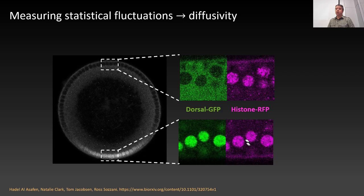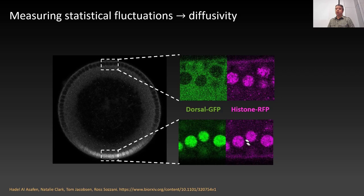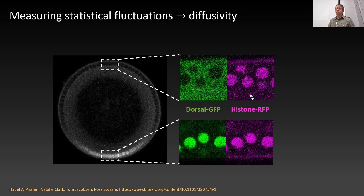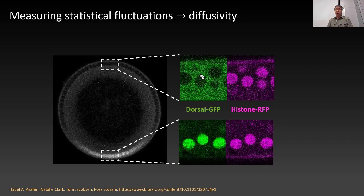In the green channel you have dorsal GFP, and shown in magenta is histone red fluorescent protein, which is inside the nucleus both on the ventral and dorsal sides. The whole point of the histone RFP is for us to see where the nuclei are. Dorsal is either in the nucleus or out of the nucleus depending on which side of the embryo you're looking at, but histone always marks the DNA.